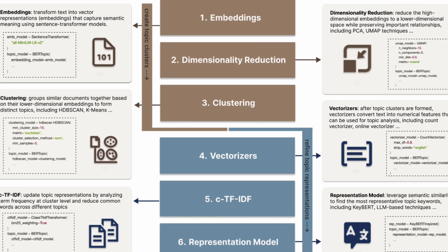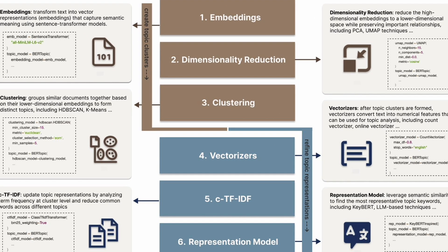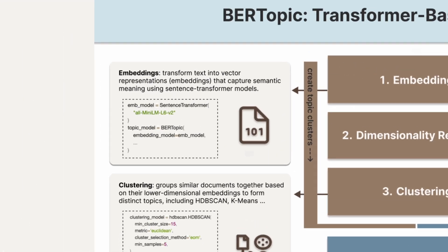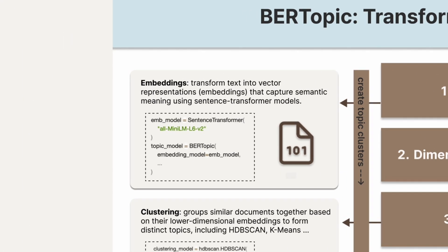Let's start by walking through the six core modules of BERTTopic that work together to create meaningful topics. The first module is Embeddings. BERTTopic relies on sentence transformer models to convert text into numerical representations that capture the meaning of sentences. These models are built on transformer architectures and are specially designed to create high-quality sentence embeddings, allowing us to measure how similar sentences are to each other through cosine distance calculations.